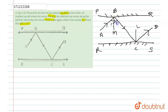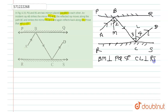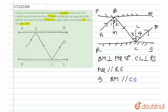Let us name this angle 1, this is angle 2, this is angle 3, and this is angle 4. We have drawn BM perpendicular to BQ and CL perpendicular to RS. Since BQ is parallel to RS, we can infer that BM is parallel to CL.